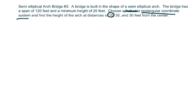So basically, the bridge spans 120 feet. This means the length of my major axis is $2a = 120$, so $a = 60$. The maximum height of the bridge is 25 feet, so that's my $b$ value.